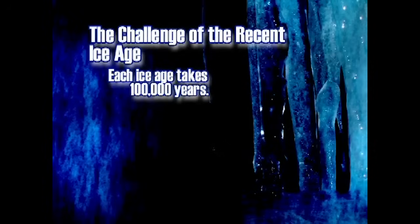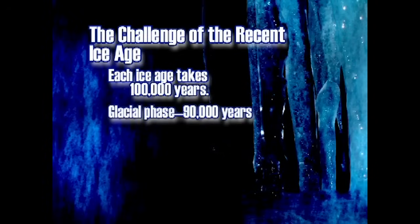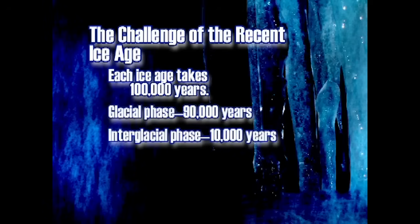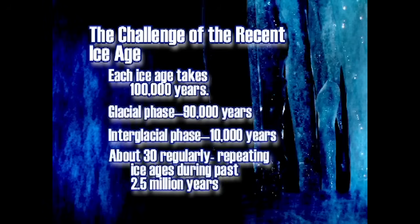This is the uniformitarian model. Each ice age takes 100,000 years: the glacial phase is 90,000 years while the interglacial phase is only 10,000 years. There have been 30 regularly repeating ice ages during the past 2.5 million years. You might have heard there were only four ice ages — that was dogma taught for about 60 years all around the world. That's all gone now.